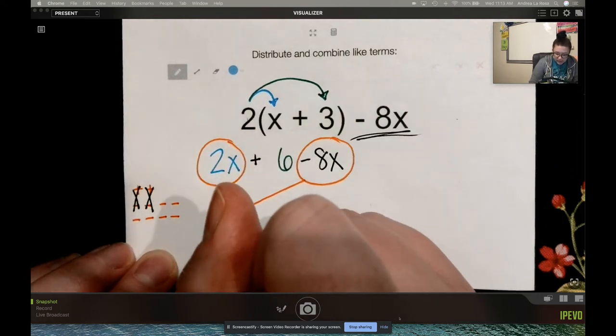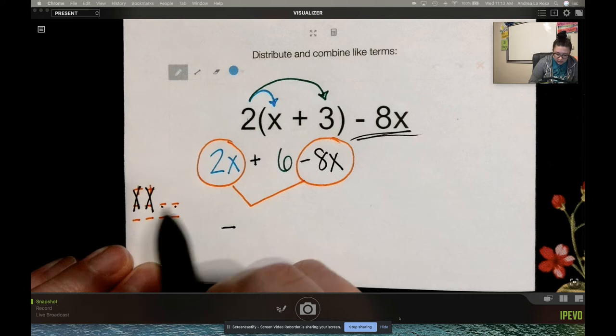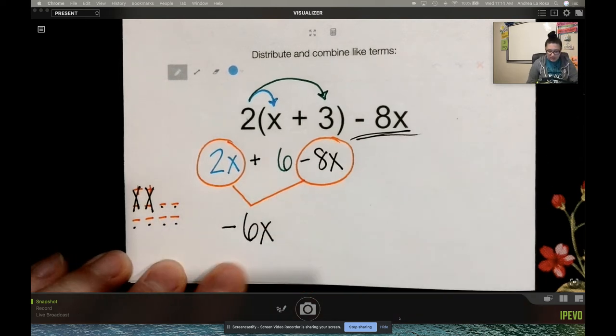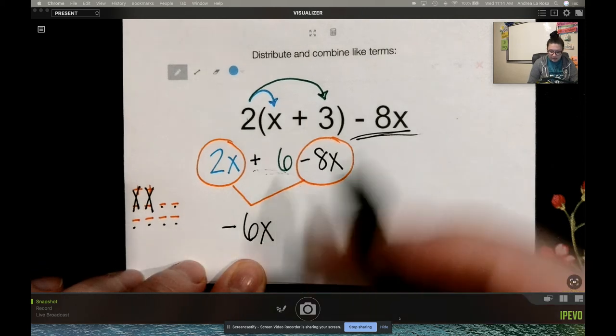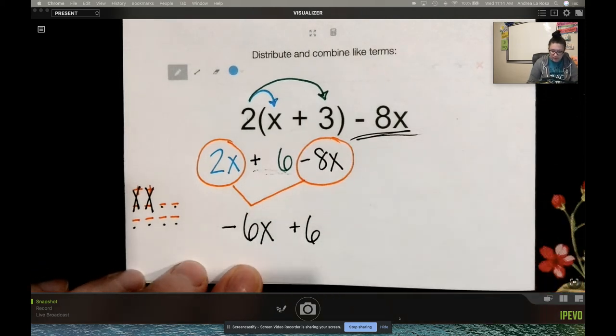So I see I have a negative 1, 2, 3, 4, 5, 6. I have a negative 6x, and then I have to keep that plus 6 for my final answer.